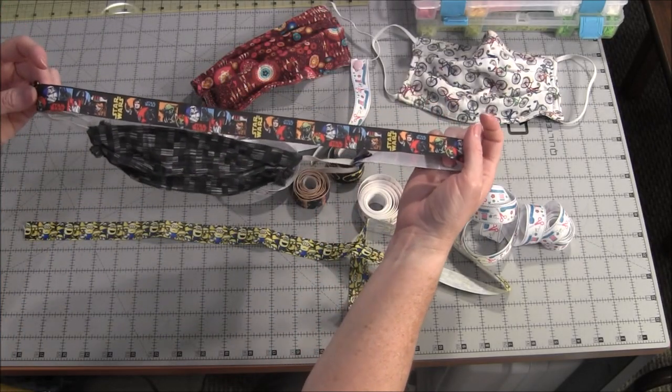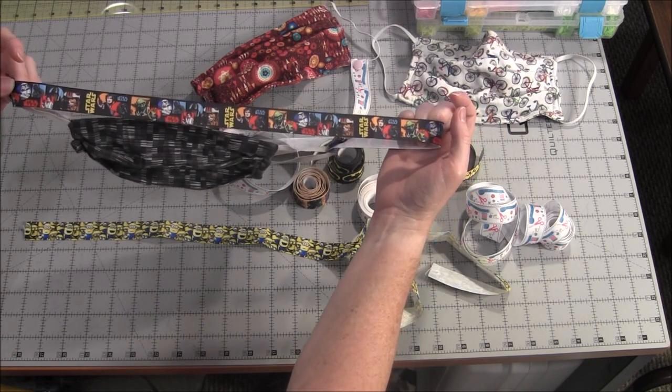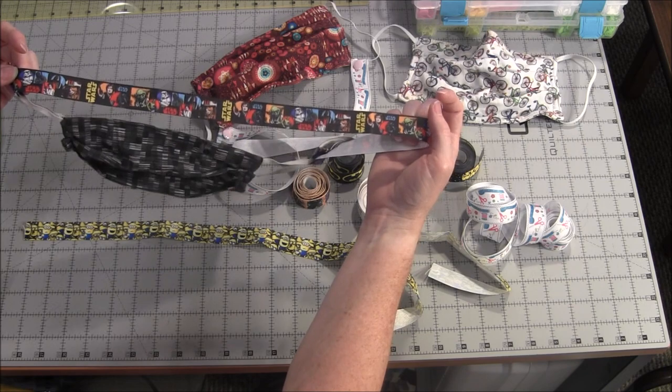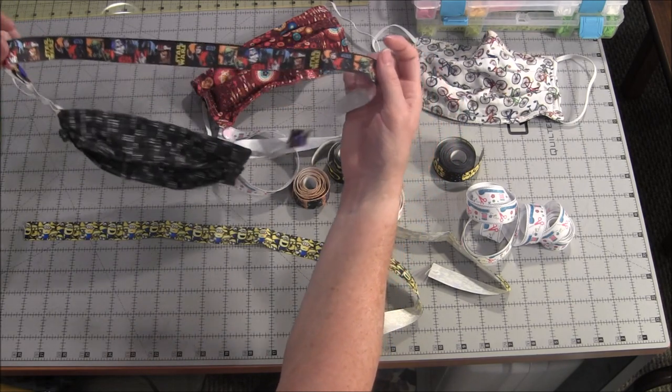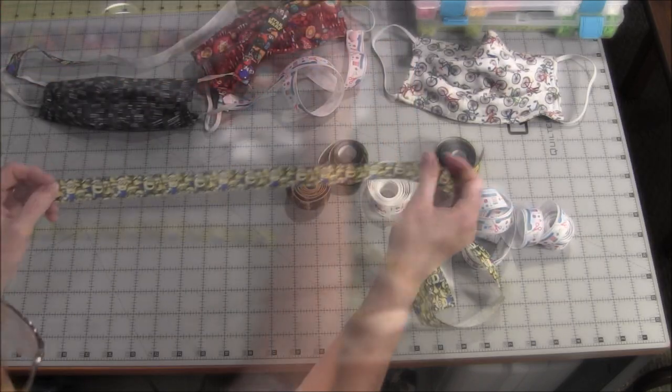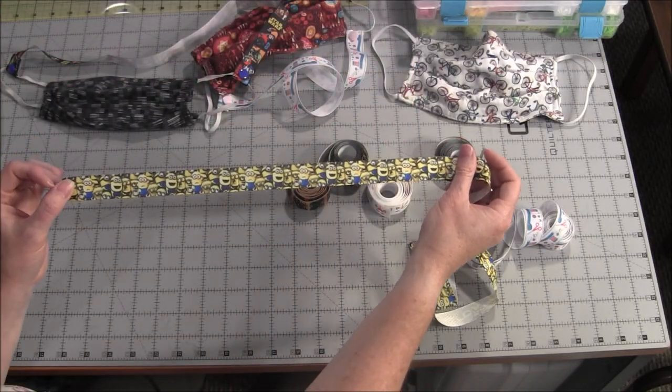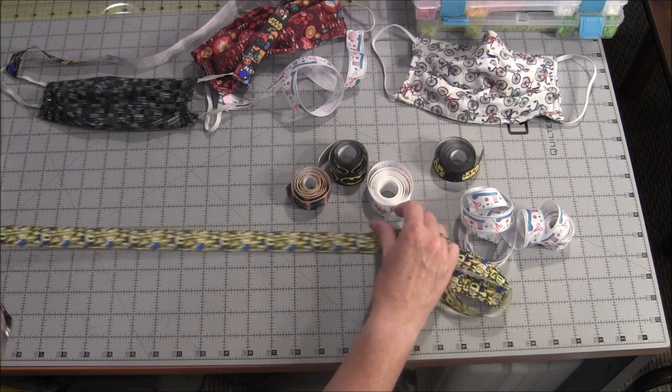To make this project you need about 28 inches of ribbon total. For kids you might want to use it a little bit shorter so it doesn't hang down as far, but the length can be adjusted according to your preference. I'm going to make one with this minion ribbon. First thing you do is measure 28 inches long and cut.